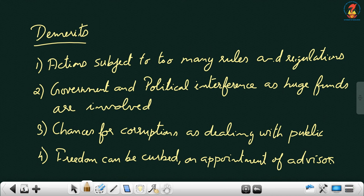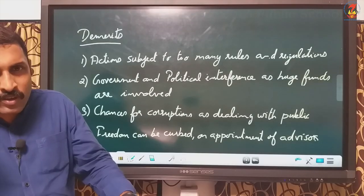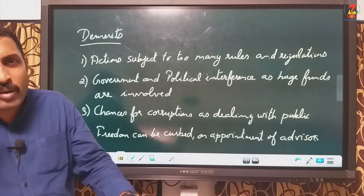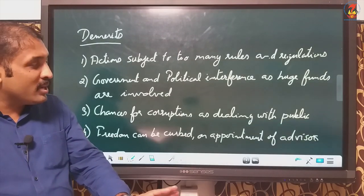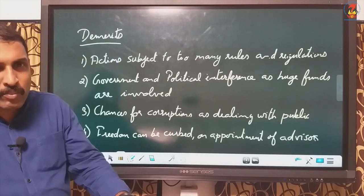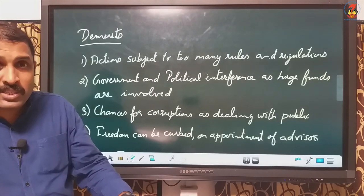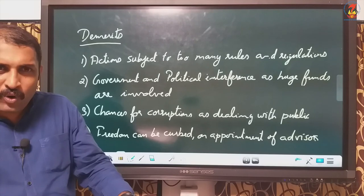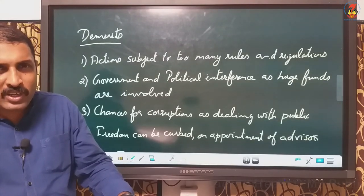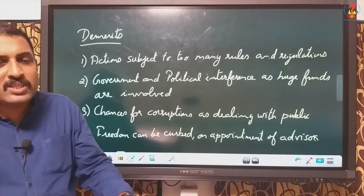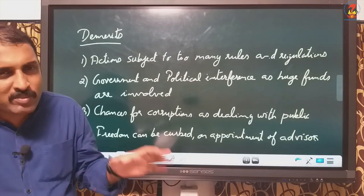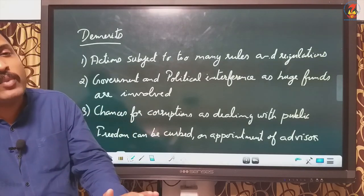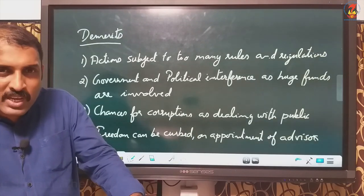There is also a chance of corruption because statutory corporations deal with the public and have a combination of government and private corporate powers, which automatically creates a chance for corruption. Another demerit is that freedom can be curbed when advisors are appointed. Government usually appoints advisors to statutory corporations, and many times these advisors may not have sufficient expertise or may strictly follow political agendas. When decisions are to be taken, if these advisors do not agree, it creates trouble and the freedom of the statutory corporation can be curbed.